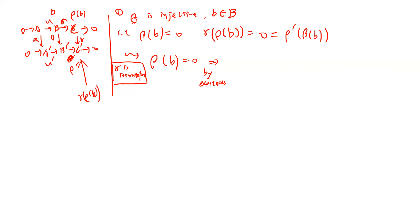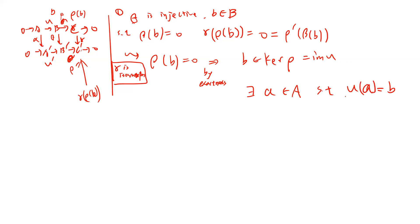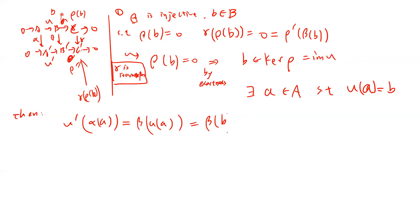Since ρ(b) = 0, b belongs to the kernel of ρ which equals the image of μ. So there exists a in A such that μ(a) = b. Then we compute μ'(α(a)) = β(μ(a)) by commutativity of the diagram, which equals β(b) = 0.